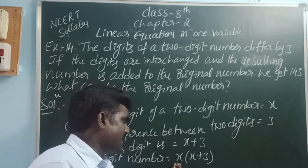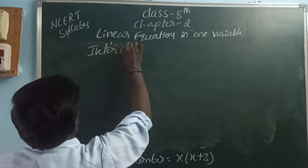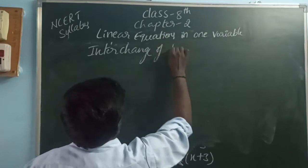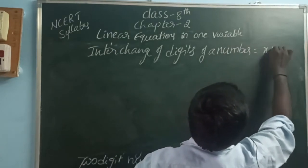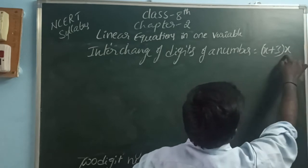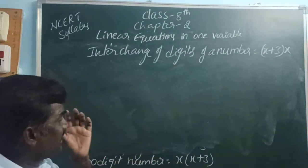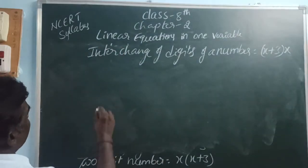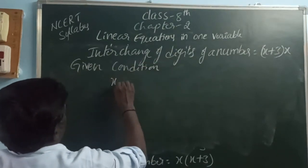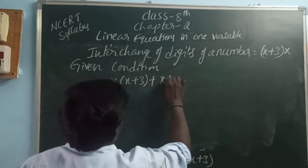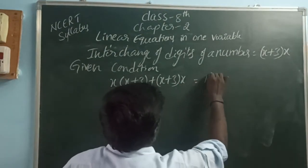In the original number, x is in the units place and x plus 3 is in the tens place. The interchanged number has x plus 3 in the units place and x in the tens place. Using expanded form — product of place value and face value — the original number is 10x plus (x+3), and the interchanged number is 10(x+3) plus x. Adding these two gives 143.